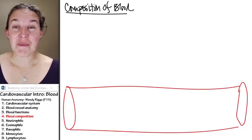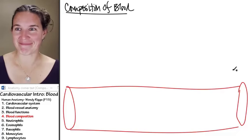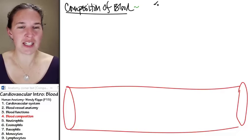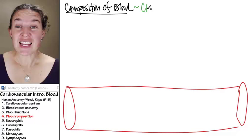Do you remember what kind of tissue blood is? This is a phenomenal final exam question. What kind of tissue is blood? Blood is a connective tissue.